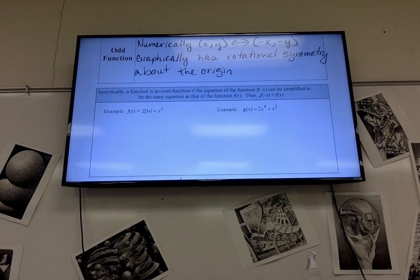A function is even if the function f of negative x can be simplified to be the same equation as the function f of x. Thus, and what you probably should highlight or circle is this part right there: f of negative x equals f of x. It just means if I plug in negative x, I should get out the exact same thing I had to start with.